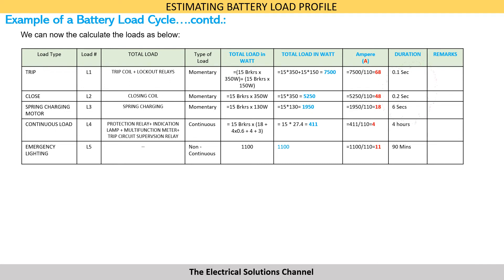The duration of the loads during tripping, closing, or spring charging operation shall be as given in the table, and this data can be obtained from the data sheet of the 11 kV switchboard. The continuous load on the battery bank is calculated by adding up all continuous loads — protection relay, indication lamps, multifunction meter, trip circuit supervision relay, etc. This works out to approximately 4 amps.